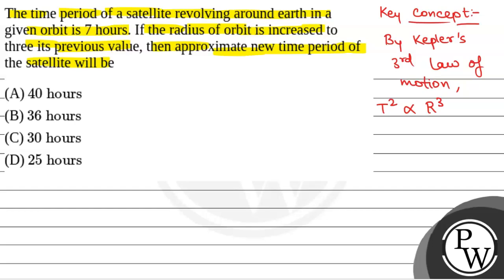So, T squared is directly proportional to R cubed. Now, from here we have T1 by T2 whole squared that will be equal to R1 by R2 whole cubed.